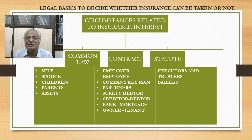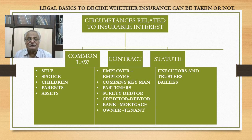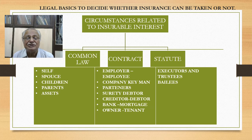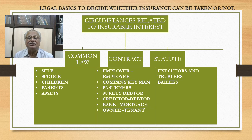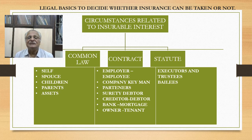In common law, the following have insurable interest: yourself, your spouse, your parents, and your assets. You can take insurance for yourself, your spouse's insurance, your children's insurance, your parents' insurance, and all your assets — your vehicle, your bungalow, your car, and all properties. These are entities for which you can take insurance.